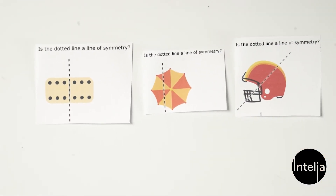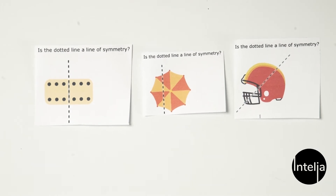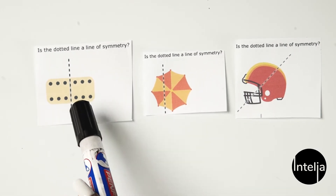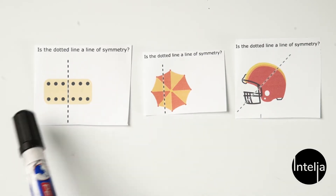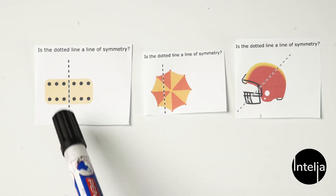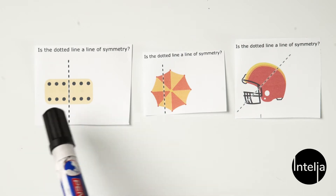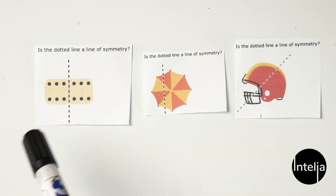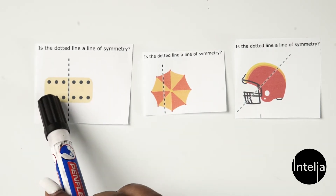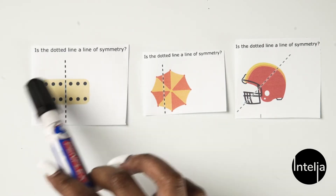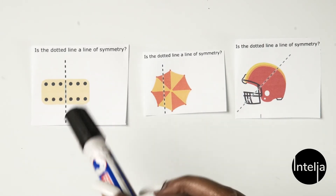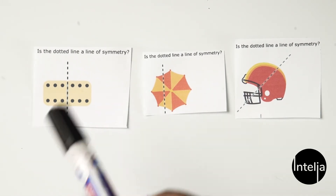Let's look at a few pictures to just solidify this. Is this dotted line a line of symmetry? If you look at it, the left and the right part of the line look exactly the same — they have the exact same number of dots. There are six dots on the left and six dots on the right. So this is a line of symmetry.